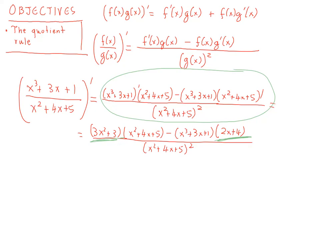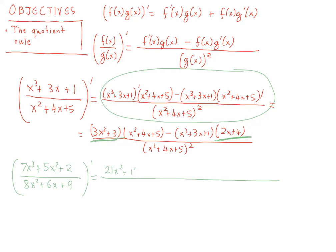Let's do an example where we apply it right away. Let's say that we have 7x³ + 5x² + 2 divided by 8x² + 6x + 9. You can pause the video and try to find the derivative yourselves. And here it is — it's going to be 21x² + 10x, that's the derivative of the top, times the bottom, 8x² + 6x + 9, minus...